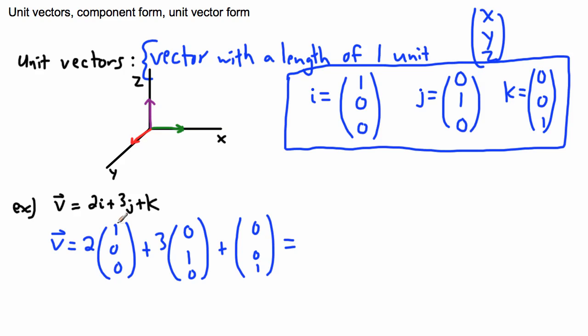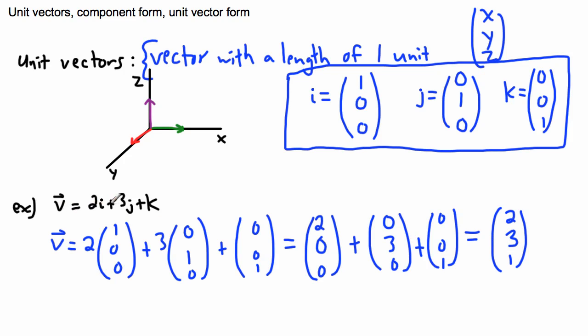Well, that means I can rewrite it. Two times one, zero, zero is just going to be two, zero, zero. Plus three times all this, so three times zero is still zero, three times one is three, and three times zero is still zero. Plus zero, zero, one. And now all I have to do is take all the x values and add them together. So two plus zero plus zero is two. All the y values, zero plus three plus zero is just three. And zero plus zero plus one is just one. So I can then define this vector v as two, three, one.